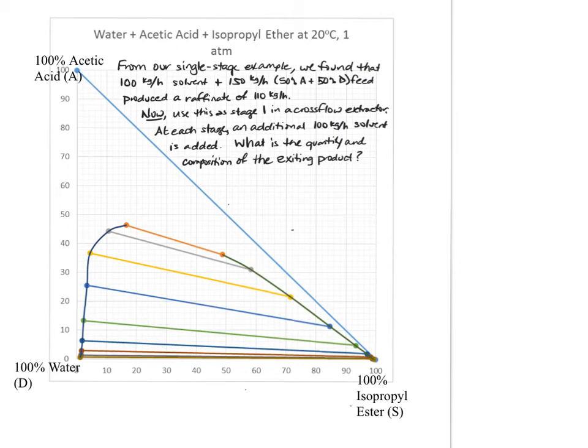In this mini video we're going to look at cross flow extraction. In our last video we looked at single stage extraction and we did a problem where we had a 50-50 feed that we calculated had 150 kg per hour flow rate.